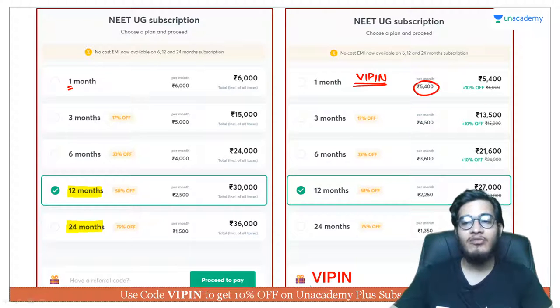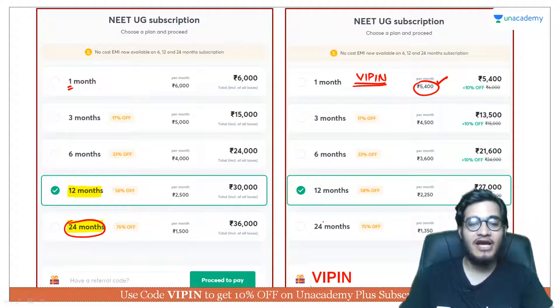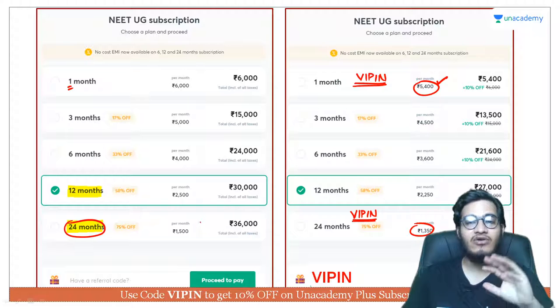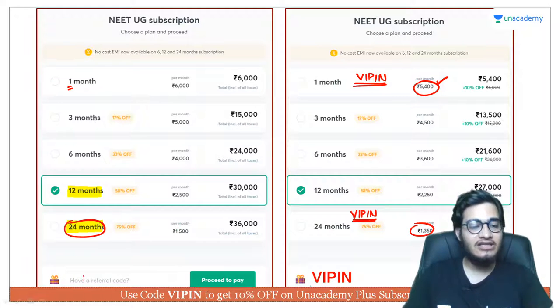Suppose you take a one month subscription pack and apply code VIPIN, you get 10% discount, so you'll pay 5,400 rupees per month. In contrast, if you take a 2-year pack and apply code VIPIN for 10% discount, you'll pay only 1,300 rupees per month. Your average monthly cost reduces 5 times.